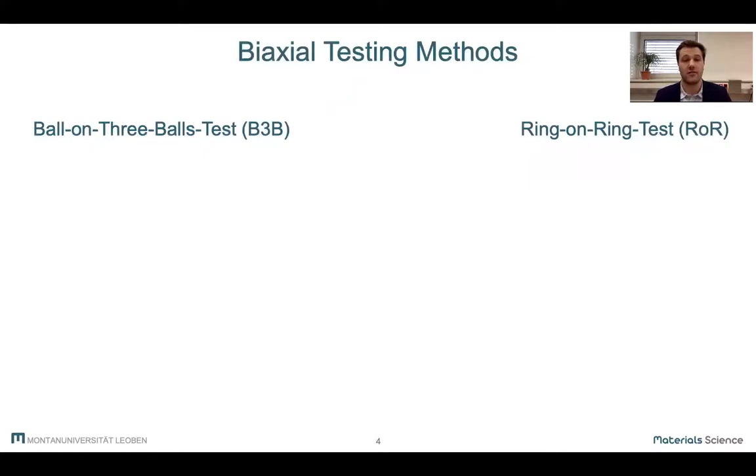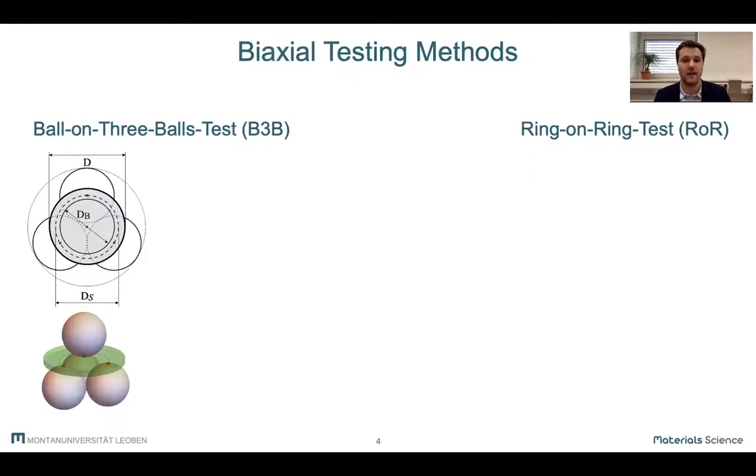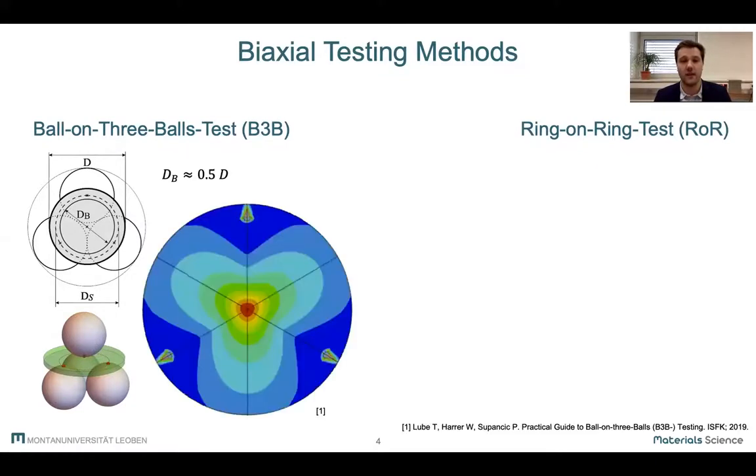As I already mentioned, we took a closer look at the ball-on-three-balls test and the ring-on-ring test. As the name already implies, the ball-on-three-balls test uses three supporting balls and a single loading ball to apply a biaxial stress field with a typical three-fold symmetry on the specimen. To reduce contact stresses, a large ball diameter, which is about 50% of the specimen diameter was used.